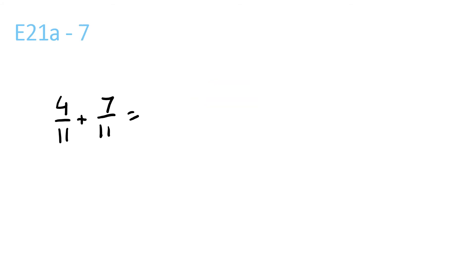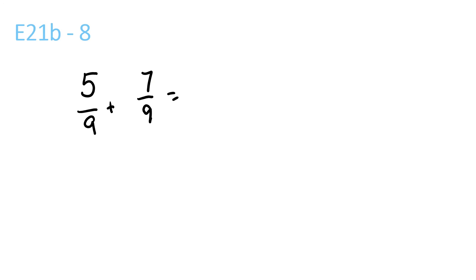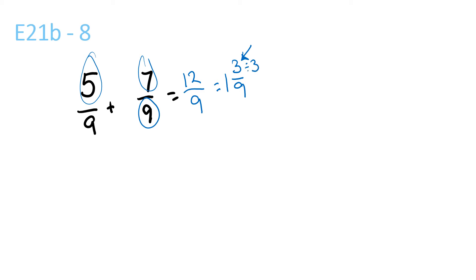4 plus 7 is 11 over 11, because the bottom one stays the same. And since the top and the bottom are both the same, just put a 1. Oh, sorry — 5 plus 7 is 12 over 9, equal to: 9 goes into 12 once with a remainder of 3 over 9. 3 divided by 3 and 9 divided by 3 — so there's 1 here, and 1 over 3. 1 and 1 third.